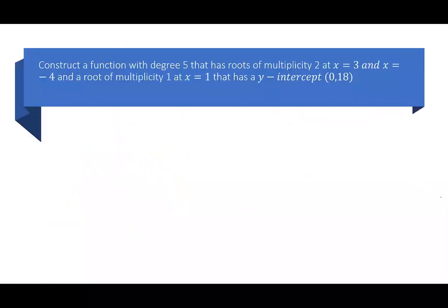We're going to do the same thing, but this time instead of giving you a graph, I'm just going to give you the information. We're going to construct a function with degree 5 that has roots of multiplicity 2 at x = 3 and x = -4, and a root of multiplicity 1 at x = 1.